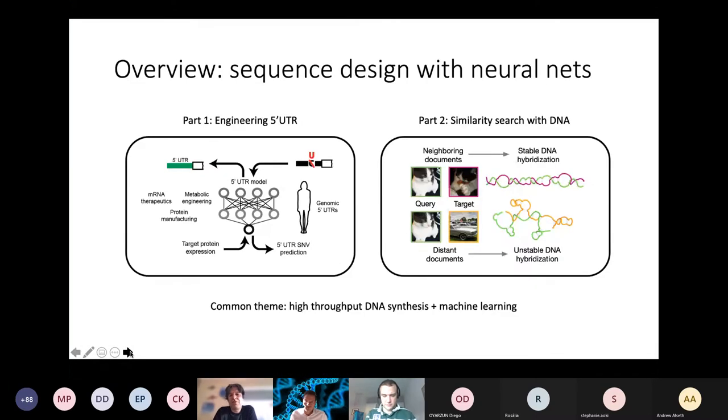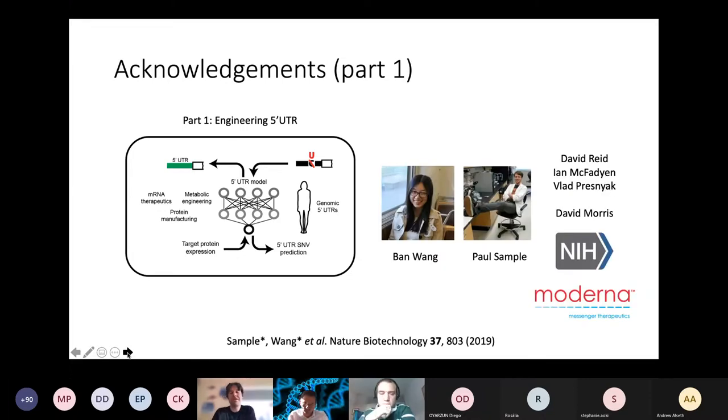I want to briefly talk about two vignettes. In the first part, I want to talk about engineering regulatory sequences like five prime untranslated regions in particular for synthetic biology applications. And then the second part, I want to talk about essentially doing similarity search in data stored in DNA. The common theme between these two pretty different topics is that we're going to use high throughput DNA synthesis together with machine learning to figure out what kind of information we want to encode in these nucleic acids.